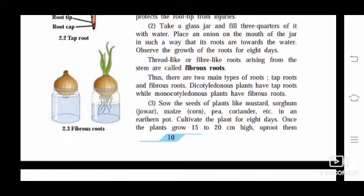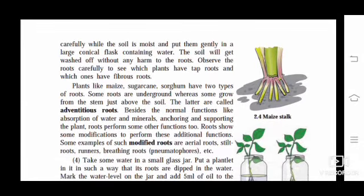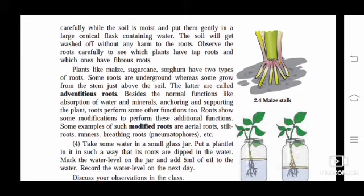Third activity: Sow the seeds of plants like mustard, sorghum (jawar), maize (makka), pea, coriander in an earthen pot. Cultivate the plants for eight days. Once the plants grow 15 to 20 cm high, uproot them carefully while the soil is moist and put them gently in a large conical flask containing water. The soil will wash off without harm to the roots. Observe the roots carefully to see which plants have tap roots and which ones have fibrous roots.